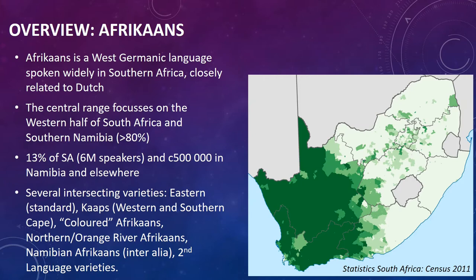And there are about 500,000 speakers in Namibia and elsewhere. It's important to realize when you talk about Afrikaans that it is not really one monolithic entity. There are different kinds of Afrikaanses, and there always have been. For instance, we have the Eastern or Standard Afrikaans, originating in the western part of the Eastern Cape, and which has since spread throughout the country as the standard. We also have Kaaps, characteristic of the Western and Southern Cape, as well as so-called Colored Afrikaans, which may or may not be related or the same thing as Kaaps, but which is spoken outside of the Western and Southern Cape. We also have multiple varieties of Northern Afrikaans, Orange River Afrikaans, Namibia Afrikaans, amongst many others.